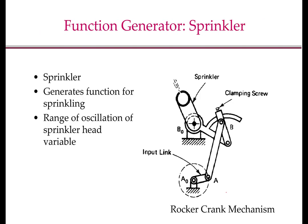Now let's look at some examples. A very common example of a function generator is the motion of a sprinkler. What we want is an input crank that produces an oscillatory motion of an output. Usually this is done with a rocker crank mechanism, and the output is a range of oscillation of the sprinkler head. The picture shown here is a four-bar rocker crank mechanism. A0B0 is the ground link (link 1), A0A is the crank (link 2), AB is the coupler (link 3), and B0B is the output link. Understanding a link as an abstraction of a physical object is helpful.